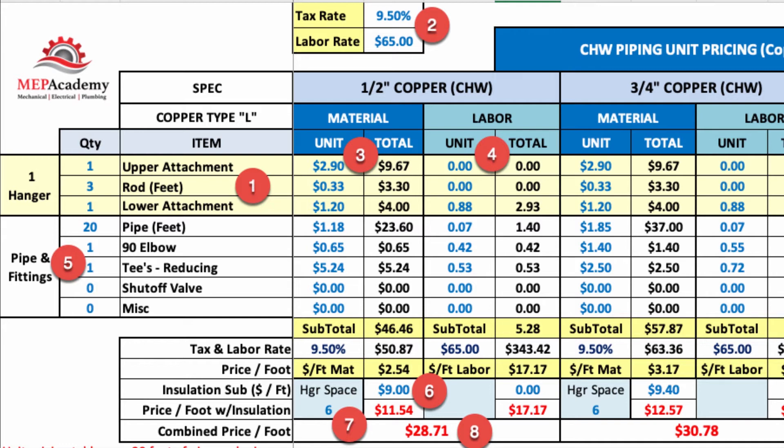The MEP Academy provides a spreadsheet that makes calculating unit pricing simple. The spreadsheet is available on the website at www.mepacademy.com. In this spreadsheet you'll see there is a place to build your hanger requirements.